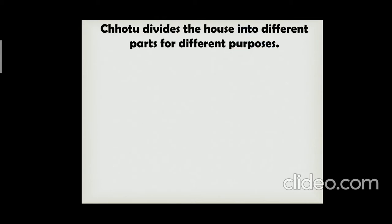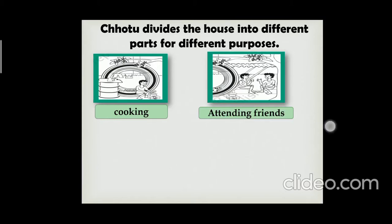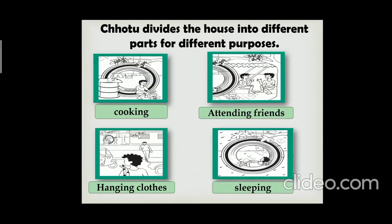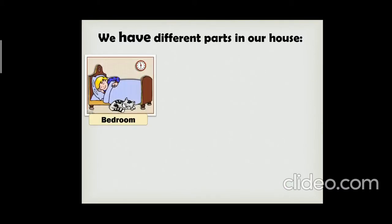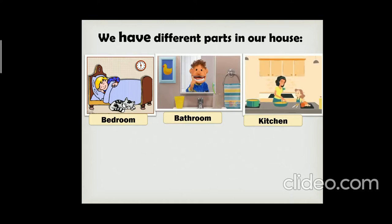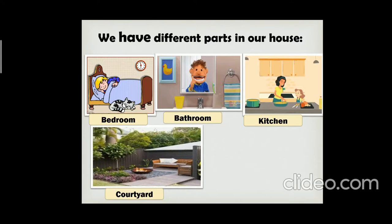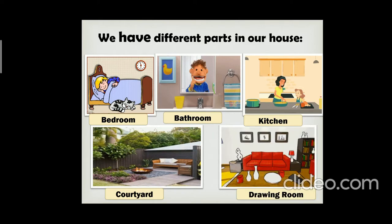Chotu divides the pipe into different parts for different purposes — a place for cooking, for attending friends, for hanging clothes, and for sleeping. Similarly, we have different parts in our house: a bedroom to sleep, a bathroom for the morning routine, a kitchen to cook, a courtyard to sit in the open and relax, and a drawing room for entertaining our guests.